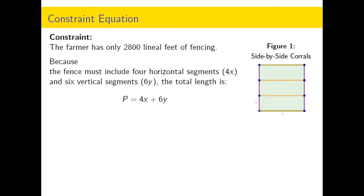We are going to set it equal to 2800 so the farmer knows the exact maximum if he uses all of his fencing. We can solve the constraint for either x or y. We're just going to substitute and simplify. I solved it for y.